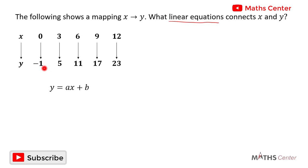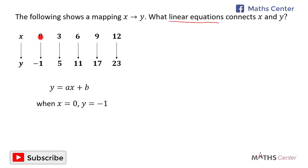If this is a linear mapping, then the rule of this mapping is given by y is equal to ax plus b, where a and b are constants. From the mapping we know that when x is equal to zero, y is equal to negative one. We can substitute this into the equation to get the value of b.